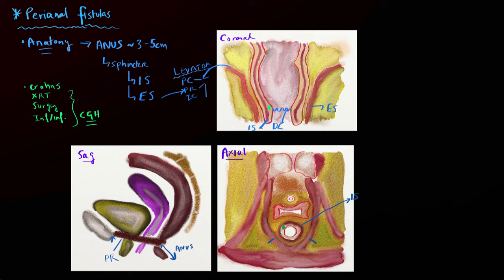There are a number of types of fistulas that can form, and different classification schemes exist. The first type is called a superficial fistula. What happens is that one of these glands gets blocked up and decompresses via the anal wall itself — going downwards and out through the anal opening. It will not cross the internal sphincter and certainly will not cross the external sphincter. These are relatively uncommon, anywhere from 10 to 20%, about 16% by one series in terms of their incidence.